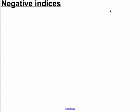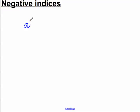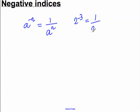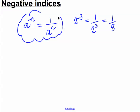Hi there. The following video will introduce negative indices. In some textbooks you may see as a definition the following: take a base number A, raise it to the power of negative N where N is a whole number, and you will get the answer 1 divided by A to the power of positive N. For example, 2 to the power of minus 3 will equal 1 divided by 2 to the positive 3, and 2 to the power of 3 is 8, so this is simply equal to 1 over 8. Now you will see that written as a definition, but what I would like to do is show you where this definition or notation might come from.